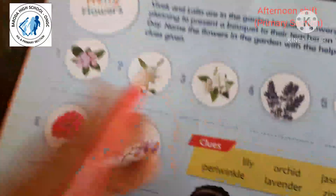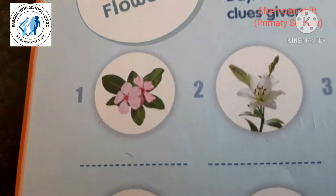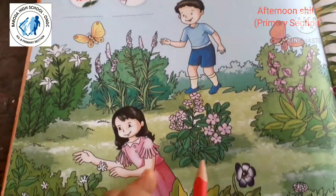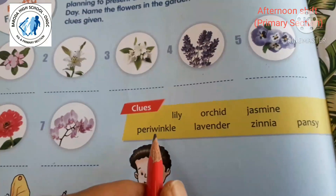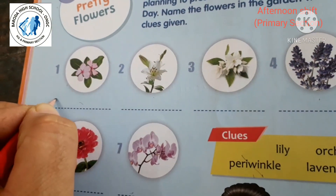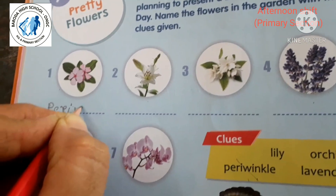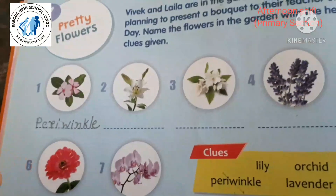The first flower is periwinkle. See here in the garden — these are periwinkle. Let's write it here. Periwinkle is given in the clues, so cut it and write down: P-E-R-I-W-I-N-K-L-E — Periwinkle.